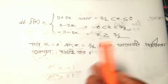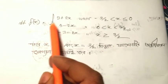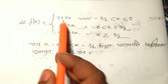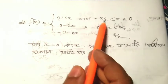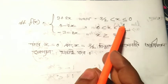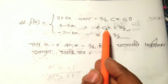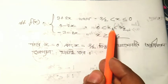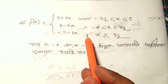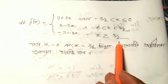Here I have to show you the example. We have f(x) equals: 3 + 2x when -3/2 < x ≤ 0; 3 - 2x when 0 < x < 3/2; and -3 - 2x when x = 3/2.